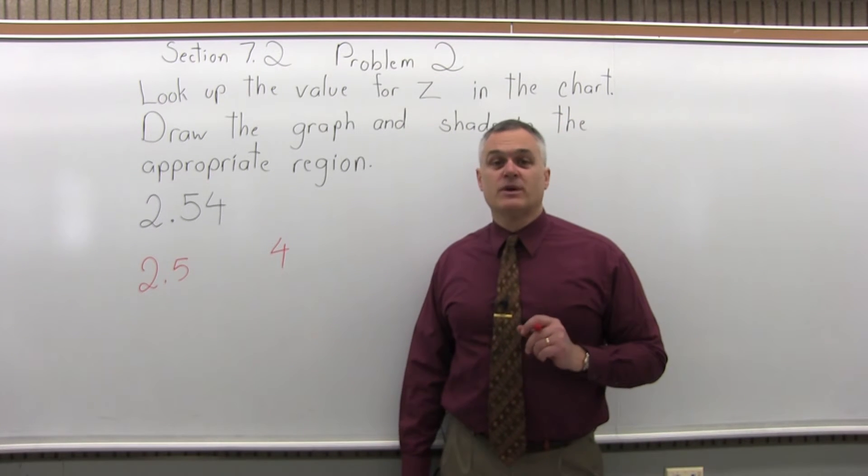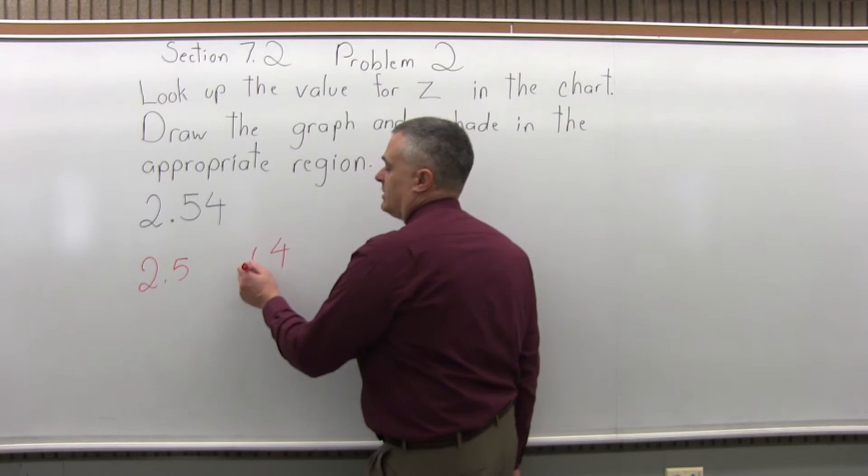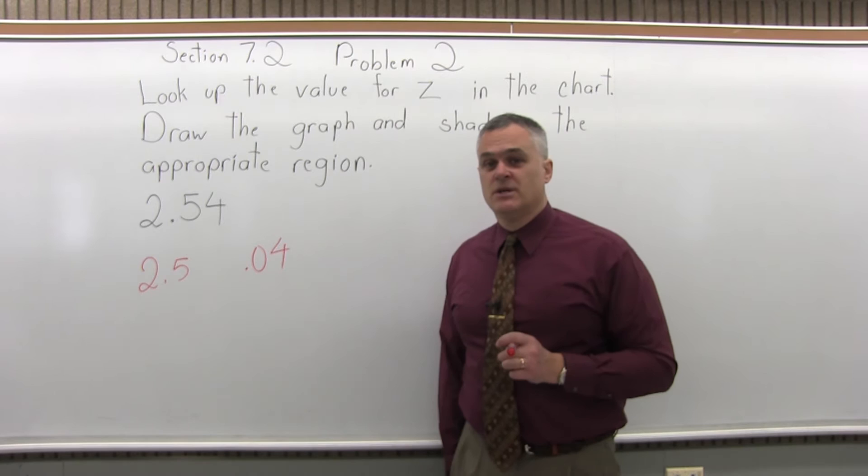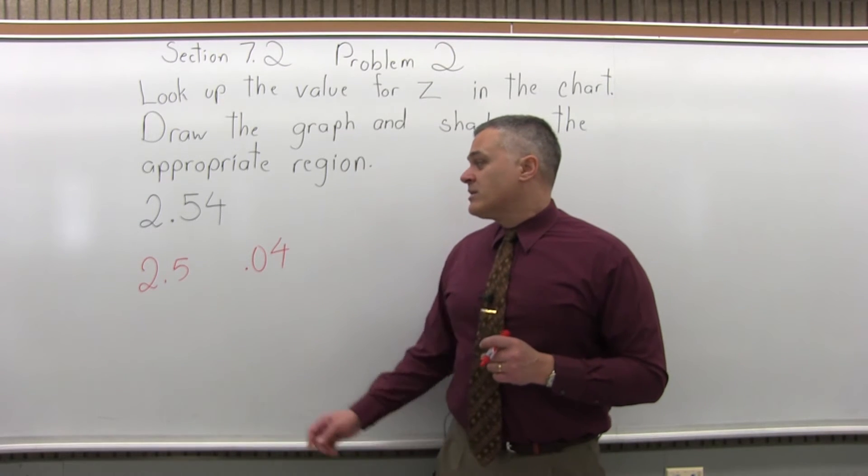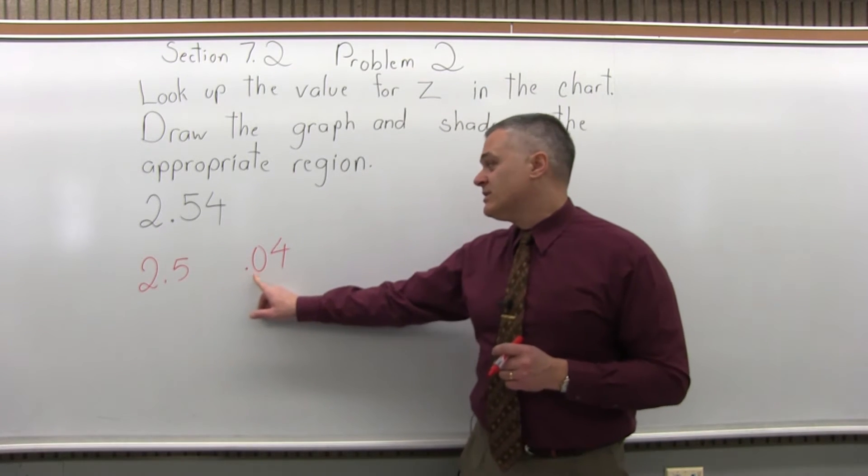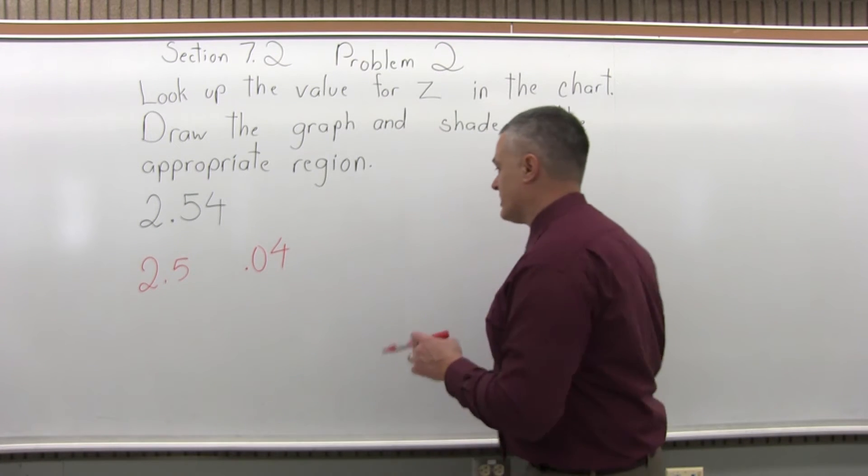Step 3, put a .0 in front of the rightmost digit that you pulled off, so that 4 becomes .04. Step 4, go to the chart, the digits from the left, 2.5 for this particular problem, tell you what row of the chart to look in. And the digit from the right with the .0 in front tells you what column of the chart to look in.